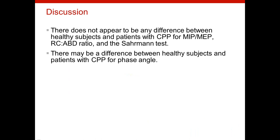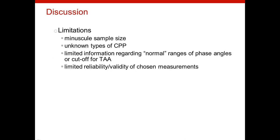Last but not least, we look at the Sahrmann data. While both patients scored pretty low, the range of scores for the controls was very wide, so the patients don't appear to be very different from our control population. In discussion, from the data it appears that patients with chronic pelvic pain do not differ from healthy controls for MIP and MEP, ribcage to abdomen ratio, and the Sahrmann test, but they may differ for phase angle of ribcage to abdomen timing — which the BioRadio really allowed us to find. Limitations include the small sample size, not inquiring about types of chronic pelvic pain, limited knowledge of normal phase angles, and the fact that the Sahrmann test has not been validated as a reliable test for core strength.